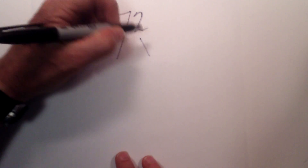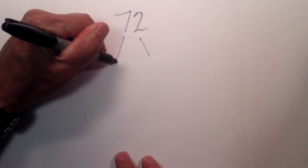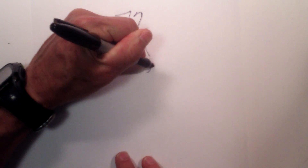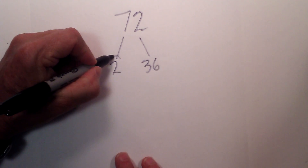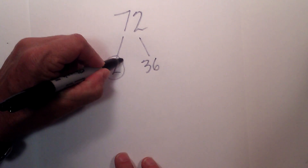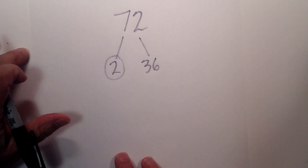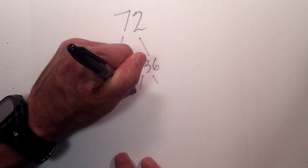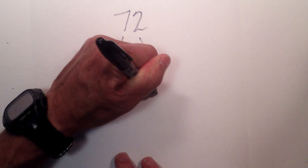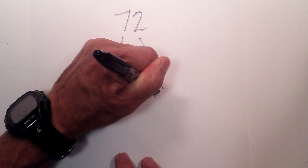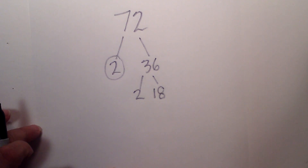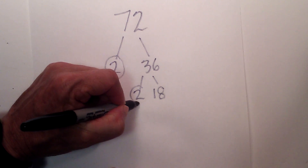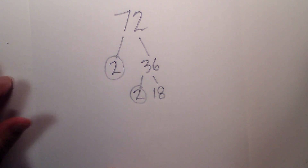I know 2 times 36 is equal to 72. I will circle the 2 because it is prime. Next, 2 times 18 is equal to 36. I will circle the 2 because it is prime.